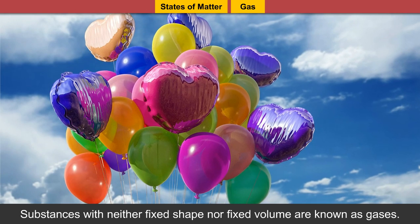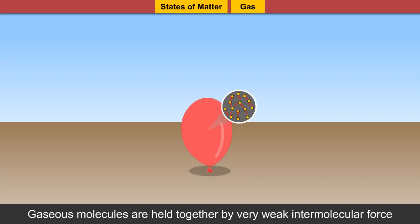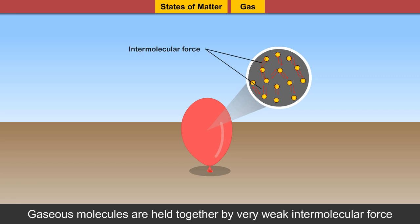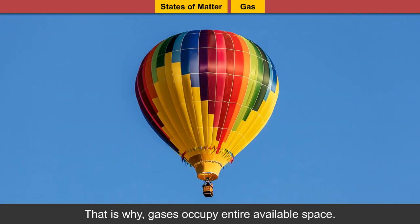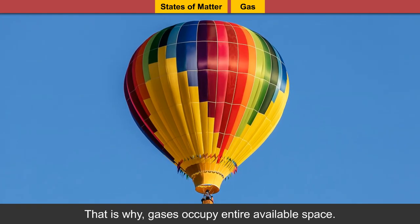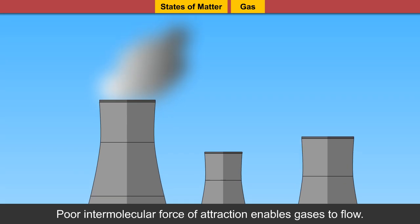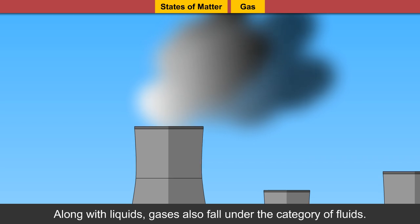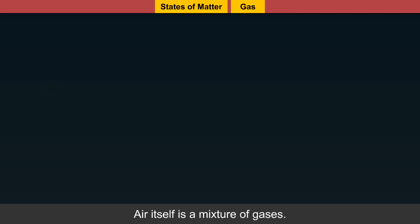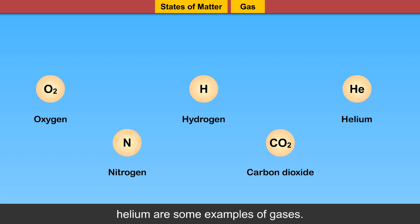Substances with neither fixed shape nor fixed volume are known as gases. Gaseous molecules are held together by very weak intermolecular forces which enables them to move freely. That is why gases occupy entire available space. Gases are very highly compressible in nature. Poor intermolecular force of attraction enables gases to flow. Along with liquids, gases also fall under the category of fluids. Air itself is a mixture of gases. Oxygen, nitrogen, hydrogen, carbon dioxide, helium are some examples of gases.